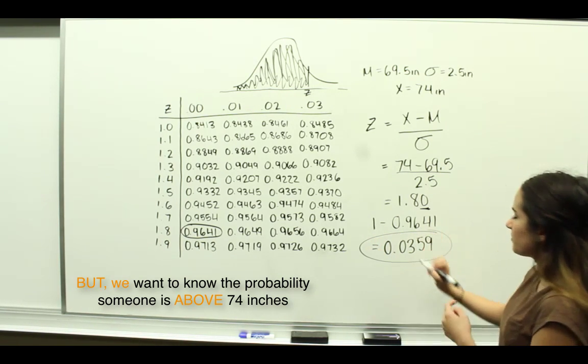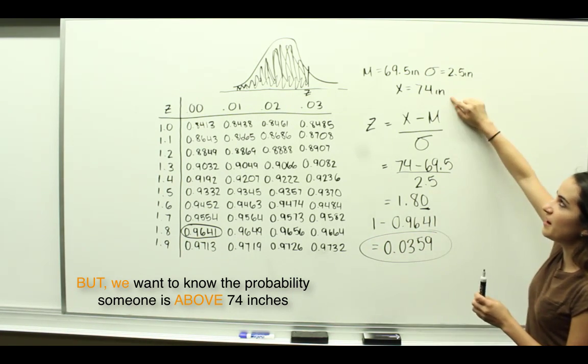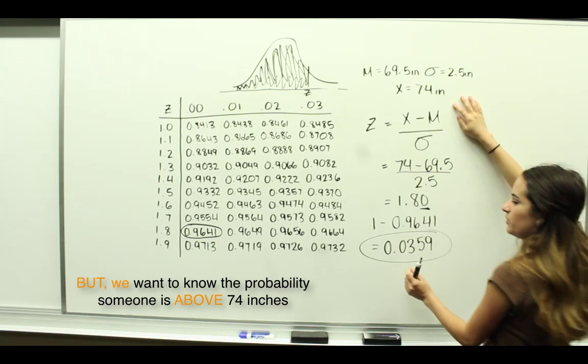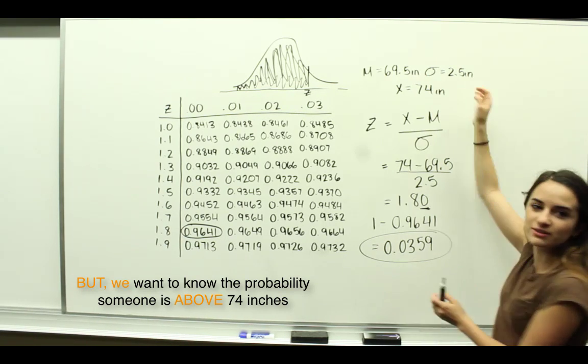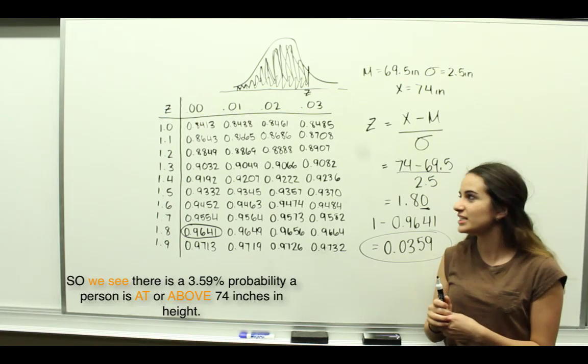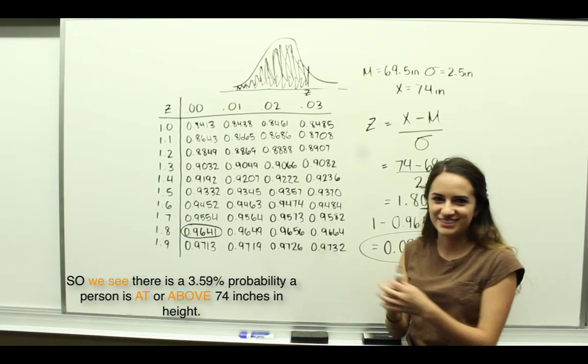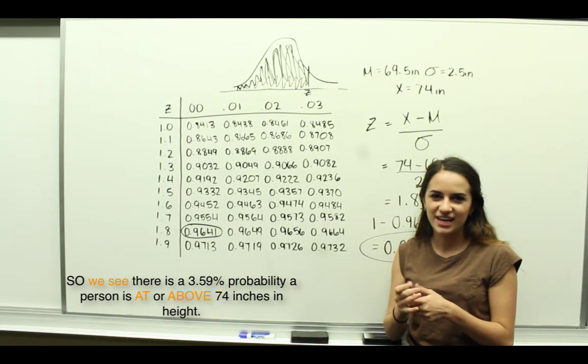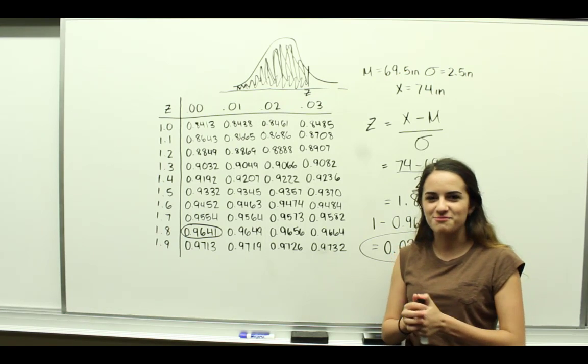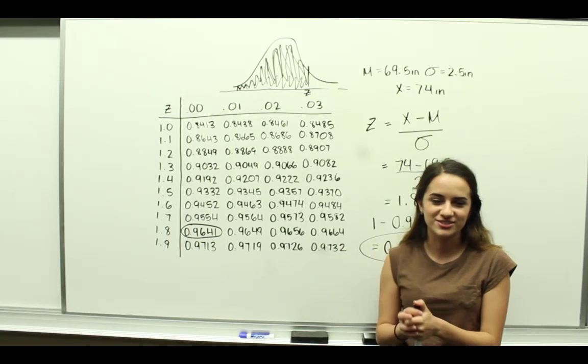This is the probability that a man at random would be taller than 74 inches in this population. And that is how you use the Z-table—well, one application of it. If you have any questions, comment below and we'll do more videos on other ways to use the Z-table. Thanks for watching.